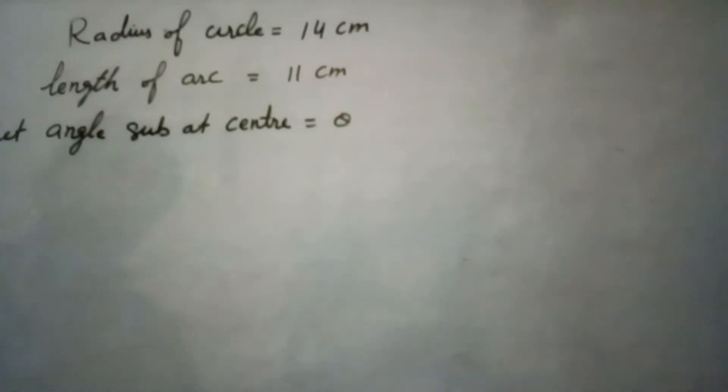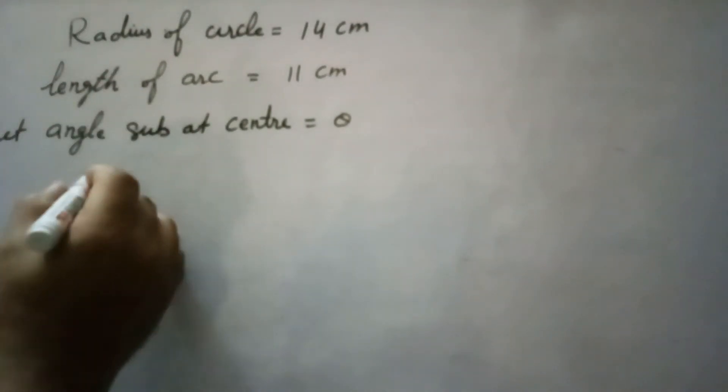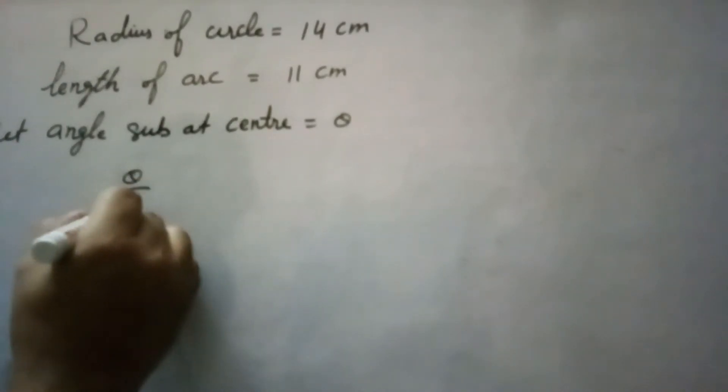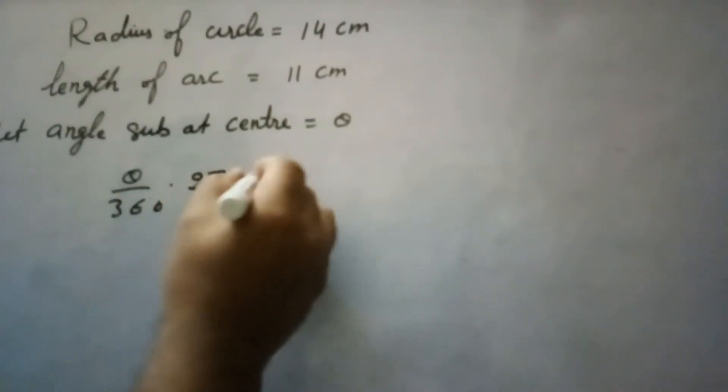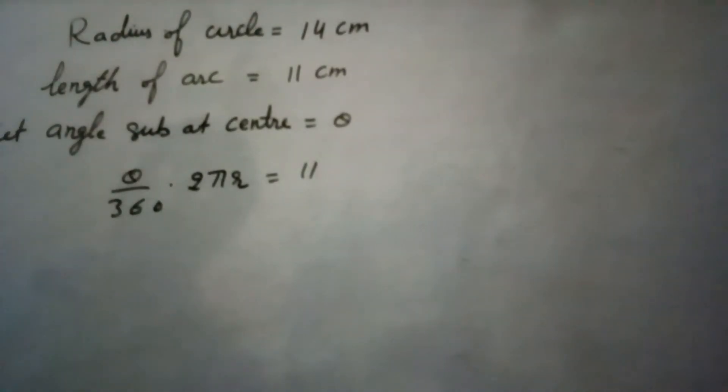So, you know the length of arc formula: length of arc equals theta upon 360 into 2 pi r, which equals to 11.